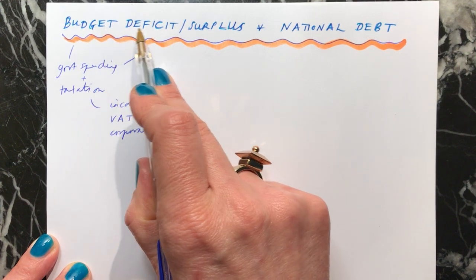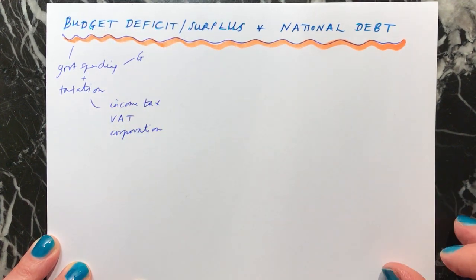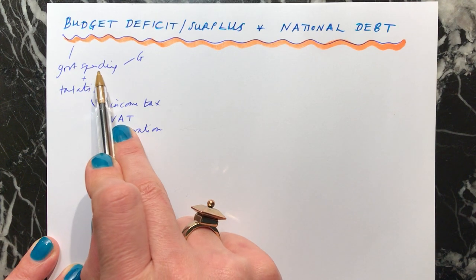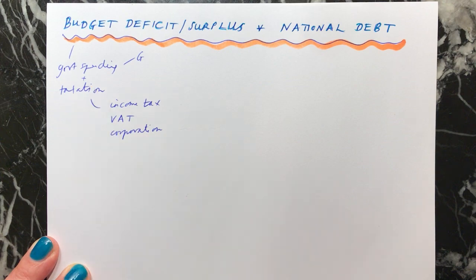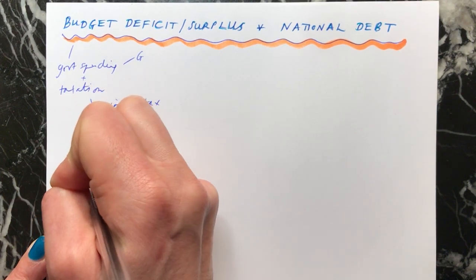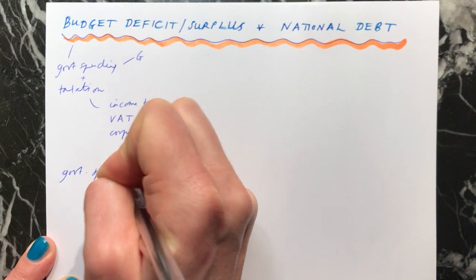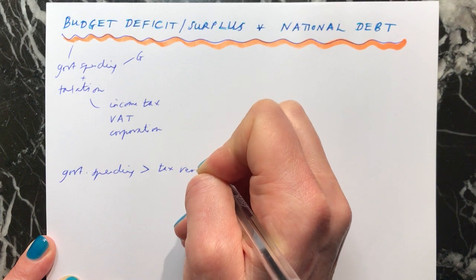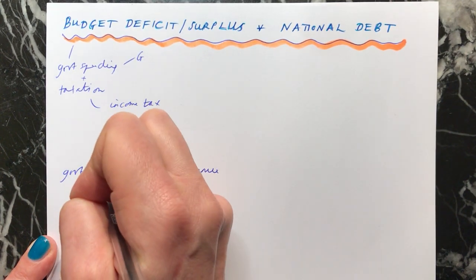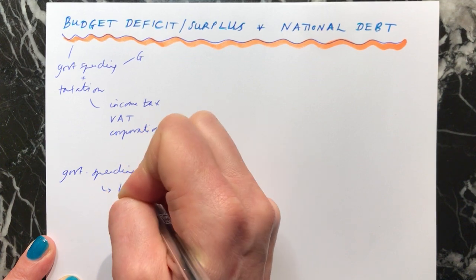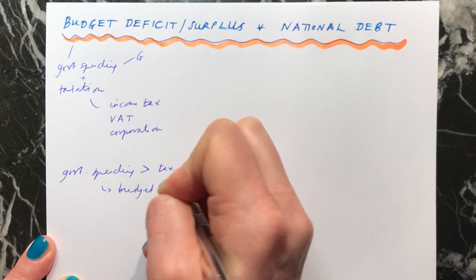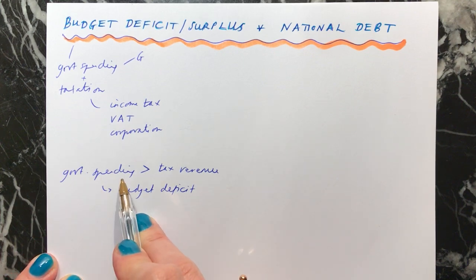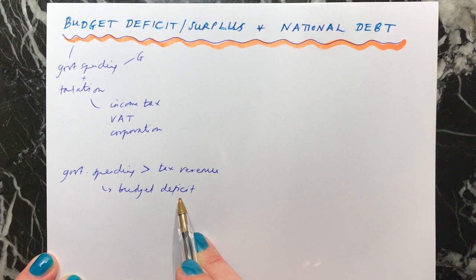If you're looking at a budget deficit or a budget surplus, you work this out by looking at the difference between how much the government is spending and how much they're receiving in taxation. If government spending is more than the amount of money they receive in tax revenue, we say that we have a budget deficit. A deficit is where you're missing something — you don't have enough.